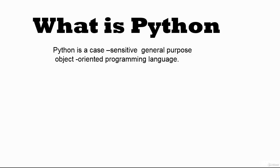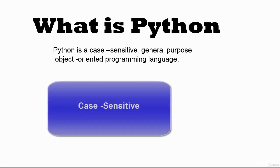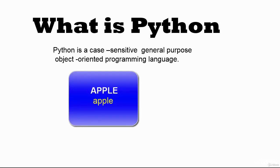In this lecture, we'll be looking at what Python is. Python is a case-sensitive, general-purpose, object-oriented programming language. By case-sensitive, I mean that an object called 'apple' in uppercase and one in lowercase are treated as two separate objects, because one is uppercase and the other is lowercase.